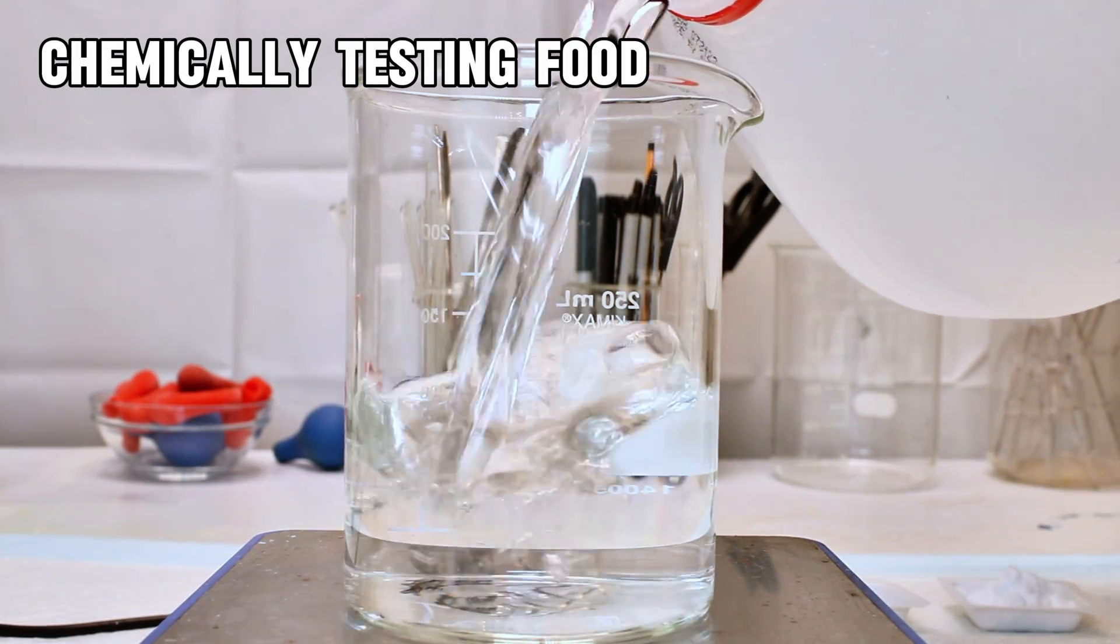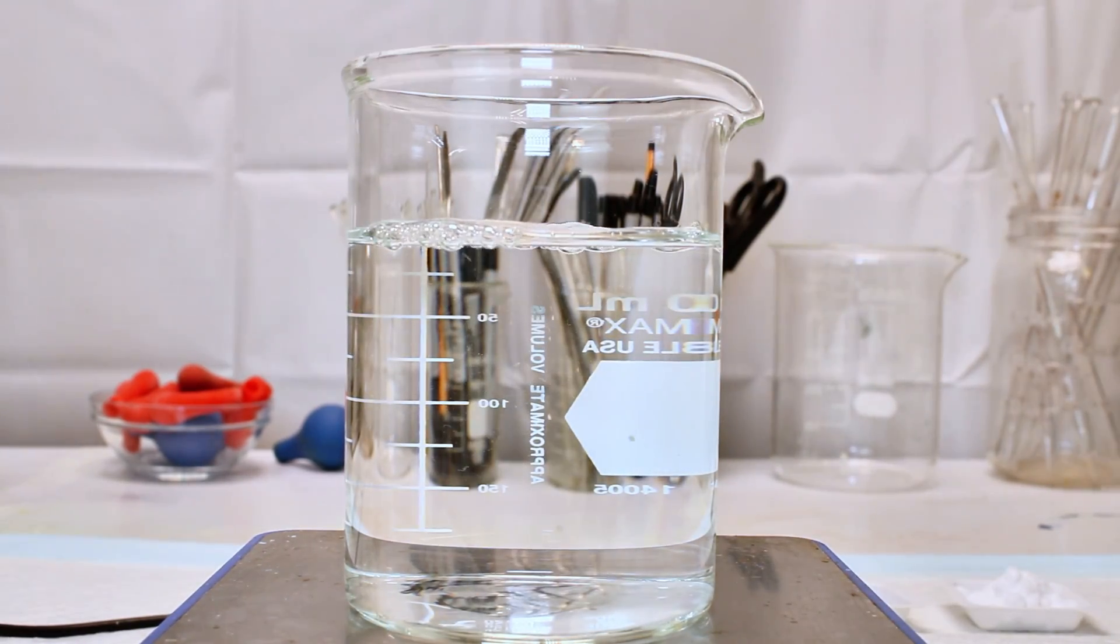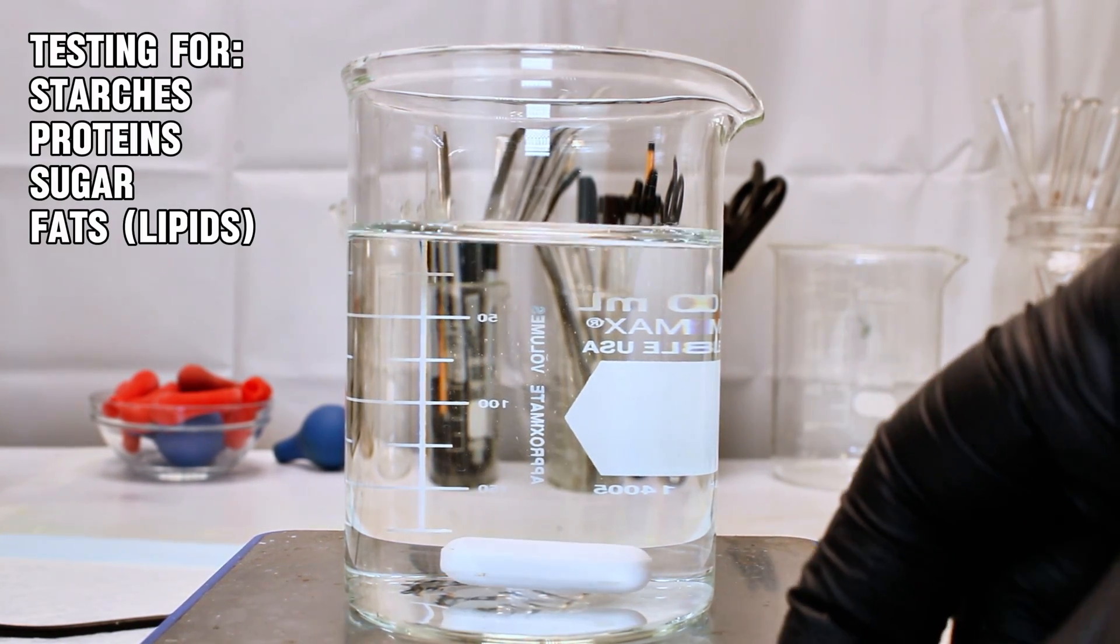Today I'm going to demonstrate a few ways scientists can test for the presence of different types of molecules in food, specifically starches, proteins, sugars, and lipids.